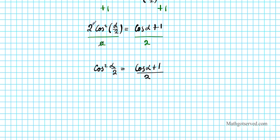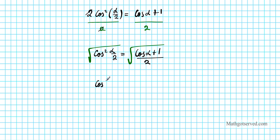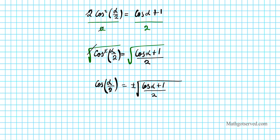Now to get rid of the square, we take the square root of both sides, which gives us cosine of alpha over 2 equals plus or minus the square root of 1 plus cosine alpha, over 2. There is your final answer — the half angle identity for cosine.